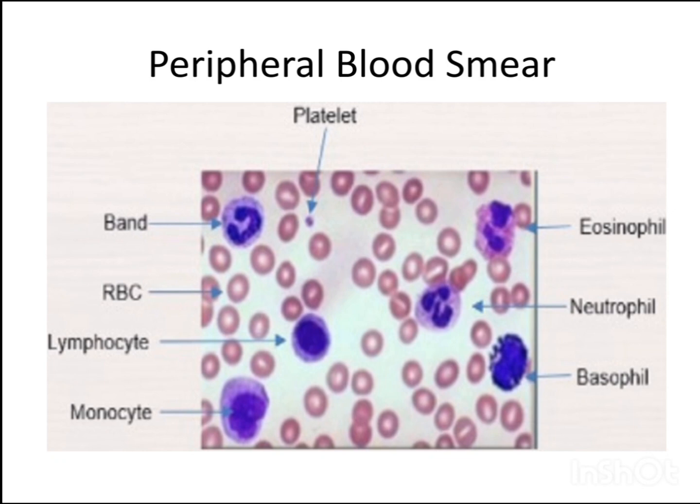Now coming to leukocytes. Leukocytes are classified as granulocytes and agranulocytes. In granulocytes, you have neutrophils, eosinophils and basophils. In agranulocytes, you have lymphocytes and monocytes. In neutrophils, you have 3-5 lobes, small blue granules, and these are the most abundant cell. In eosinophils, you have spectacle-shaped bilobed nucleus and brick-red granules. In basophils, you have granules obscuring the nucleus; these are the least abundant cell.